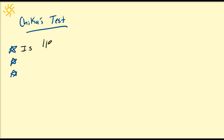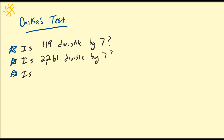Hello there. In this video we're going to discuss an arithmetic test known as Chica's test, which can be used to determine whether a number is divisible by 7. So it can answer questions of the following forms: is 119 divisible by 7? Does 7 go into 119 evenly? Is 2,261 divisible by 7? And is 47,481 also divisible by 7? We'll discuss how to use Chica's test to determine whether a number is divisible by 7 or not.